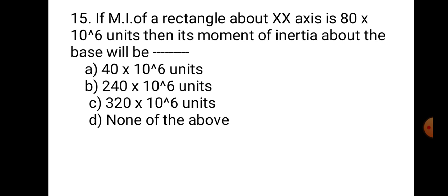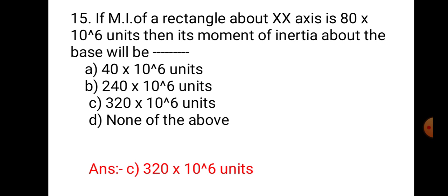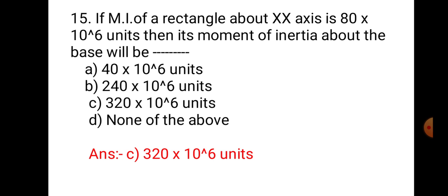Question number 15. The MI of a rectangle about the XX axis is 80×10⁶ units. Then its MI about the base will be: A. 40×10⁶, B. 240×10⁶, C. 320×10⁶, and D. None of the above. MI about the XX axis is BD³/12, and MI about the base is BD³/3. It is clear that MI about the base is 4 times the MI about the XX axis. Therefore, 4×80 = 320×10⁶ units. Hence, the correct answer is C. 320×10⁶ units.